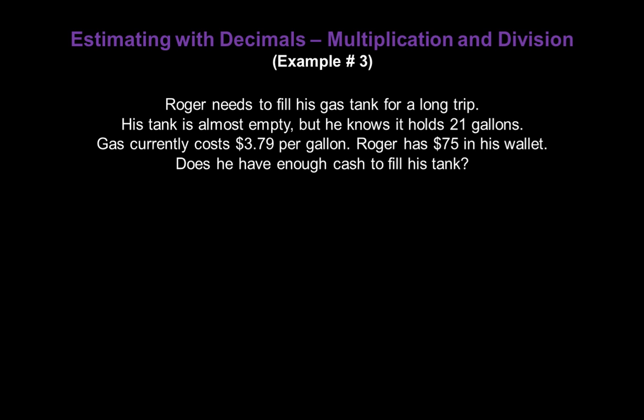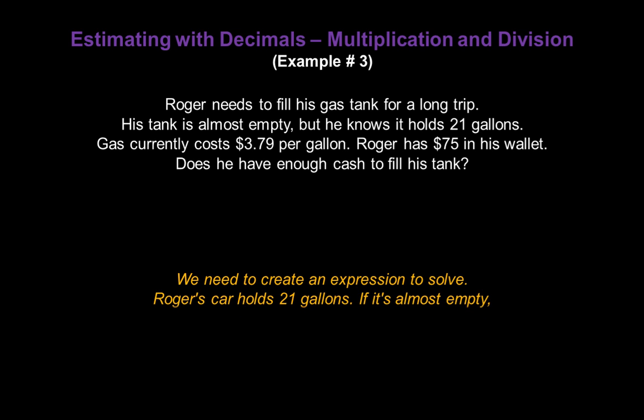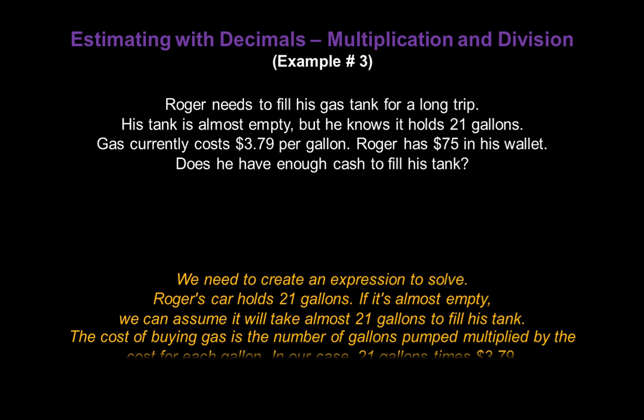Now let's do a word problem. Roger needs to fill his gas tank for a long trip. His tank is almost empty. But he knows it holds 21 gallons. Gas currently costs $3.79 per gallon. Roger has $75 in his wallet. Does he have enough cash to fill his tank? Well, we need to create an expression to solve first. We know Roger's car holds 21 gallons. If it's almost empty, we can assume it will take almost 21 gallons to fill his tank. The cost of buying gas is the number of gallons pumped multiplied by the cost for each gallon. So in our case we'll have 21 gallons times $3.79.